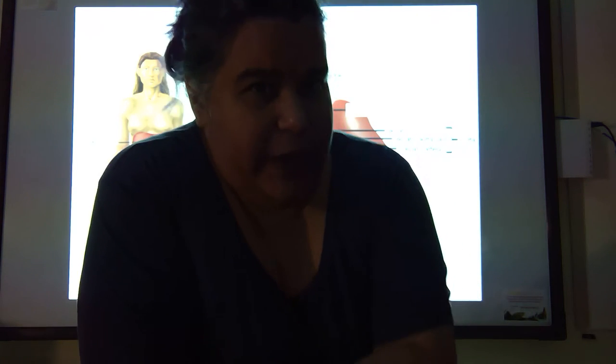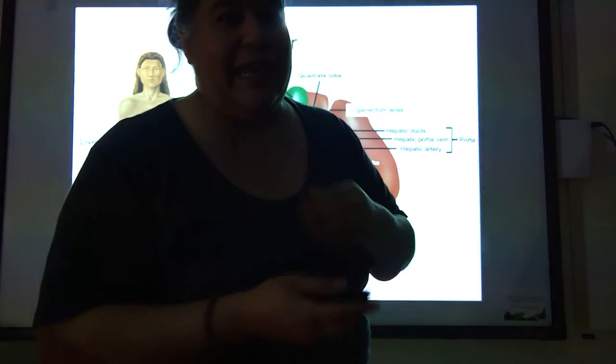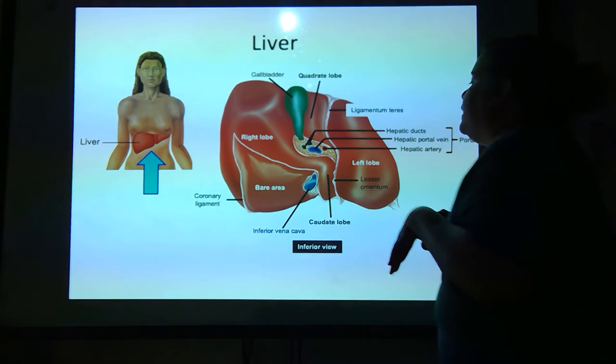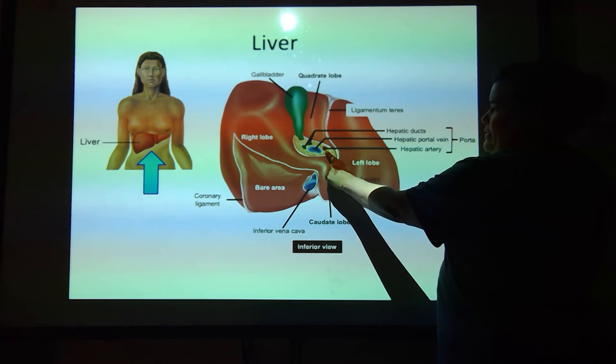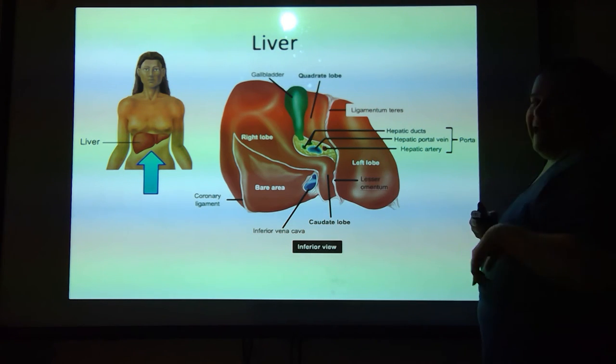That's why when somebody gets their gallbladder removed, it's not that big of a deal because the liver is still making it. The only problem is if you need highly concentrated bile, you're not making that anymore, so that doesn't work out so well — instead you get things like diarrhea. Now the last thing in this porta is this red thing right here — this is the hepatic artery.